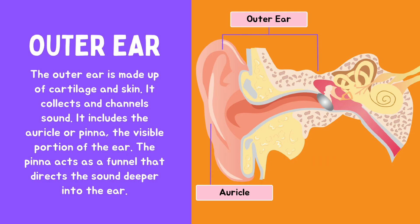The outer ear is made up of cartilage and skin. It collects and channels sound. It includes the auricle or pinna, the visible portion of the ear. The pinna acts as a funnel that directs the sound deeper into the ear.